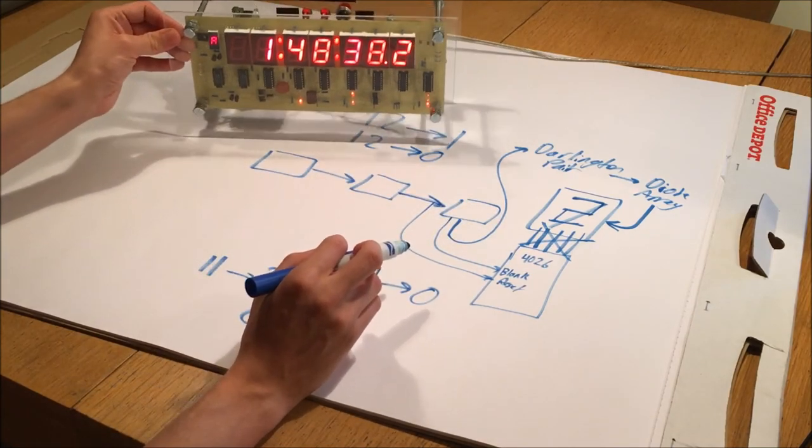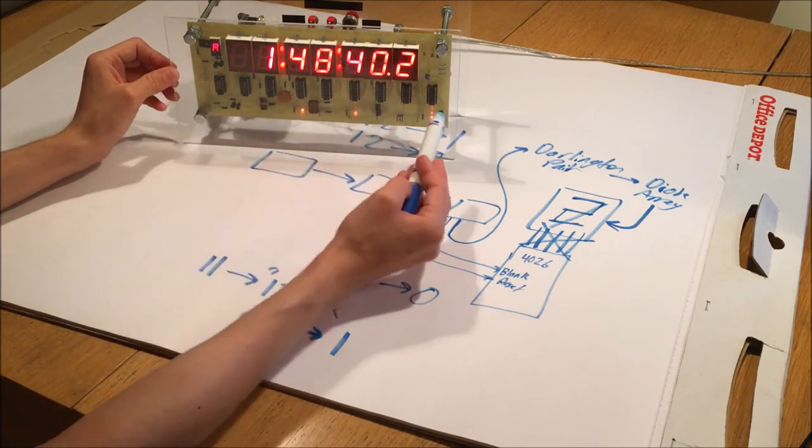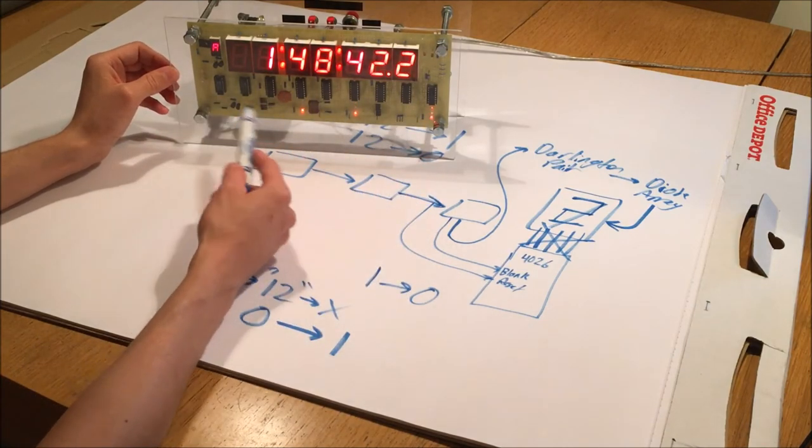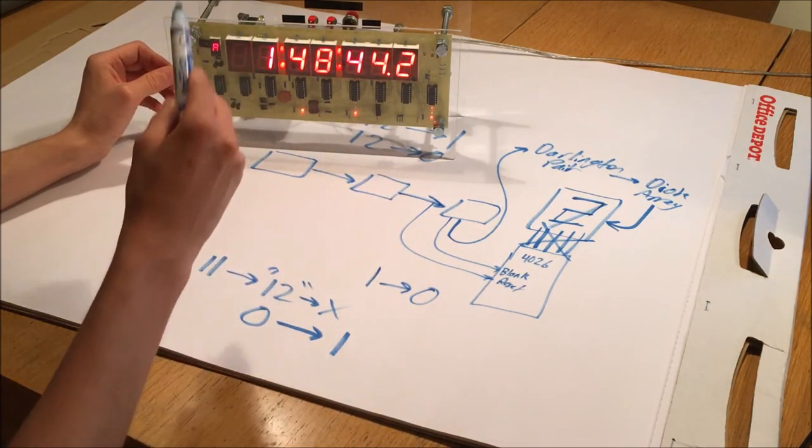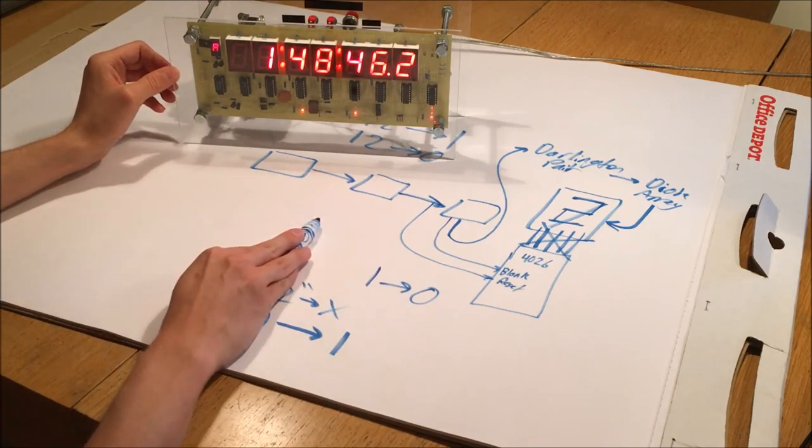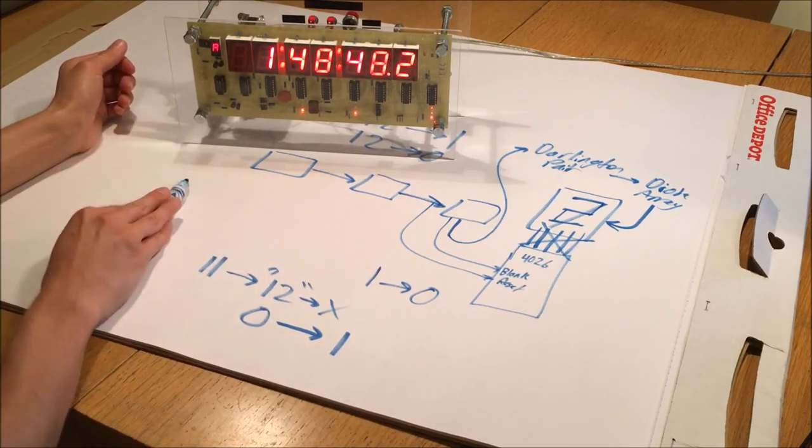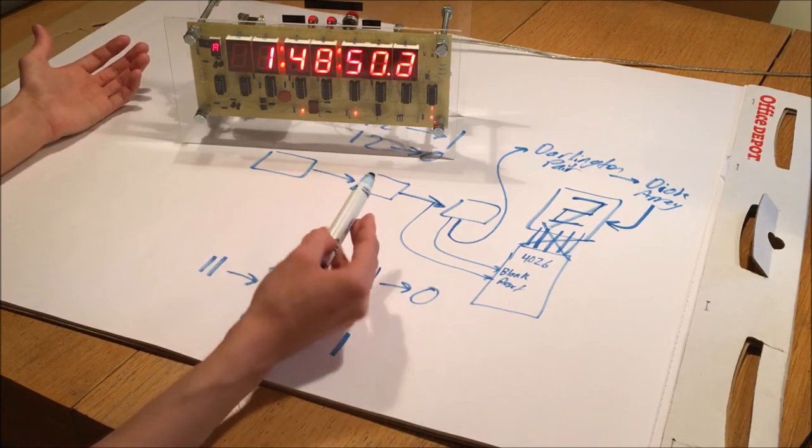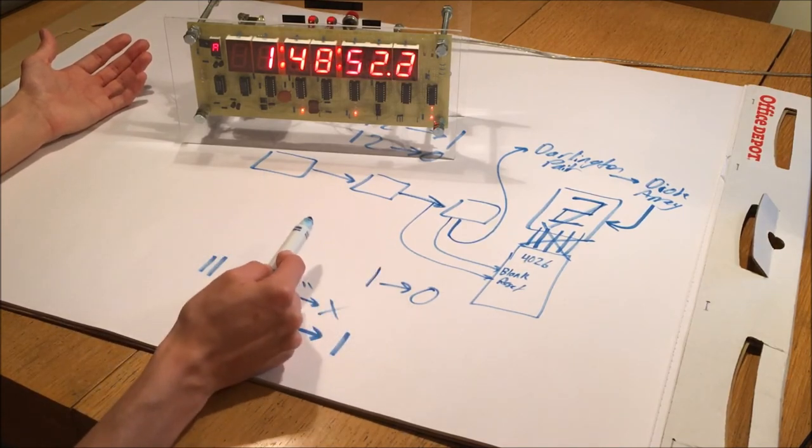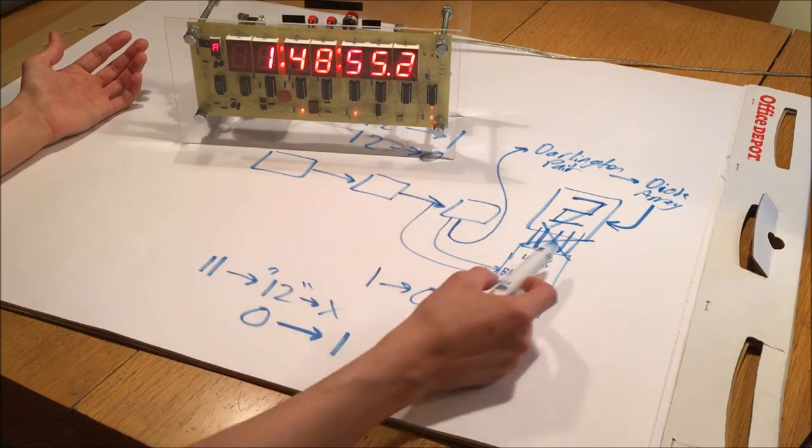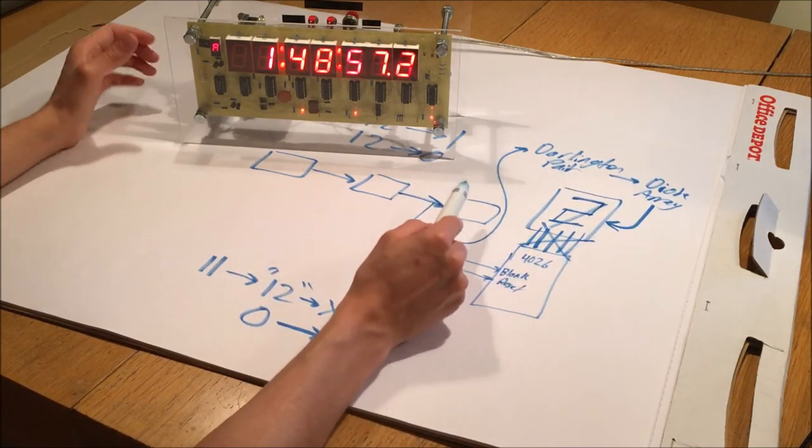So hopefully now it makes a bit more sense why I needed all these extra chips, and how the clock distinguishes between going from 12 o'clock to 1 o'clock, and between going from 9 o'clock to 10 o'clock to 11 o'clock. Because even though the chip has to reset in both instances, it is subtly different. And as a result, I have to add all this extra circuitry.